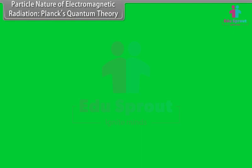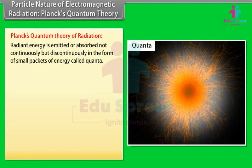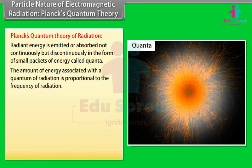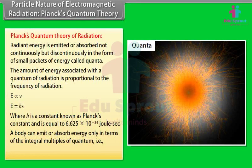Planck's Quantum Theory of Radiation: Radiant energy is emitted or absorbed not continuously but discontinuously in the form of small packets of energy called quanta. The energy associated with a quantum of radiation is proportional to its frequency: E = hν, where h is Planck's constant = 6.625 × 10⁻³⁴ joule second. A body can emit or absorb energy only in integral multiples of a quantum.